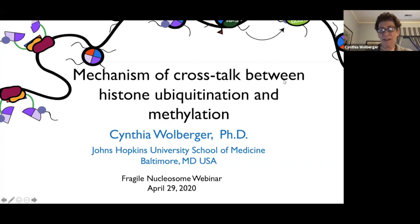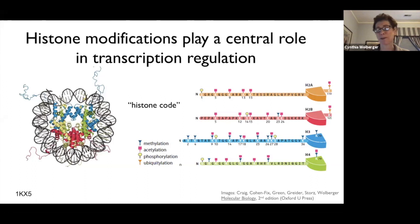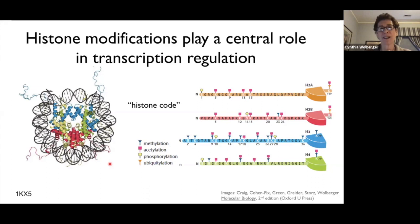I'm going to be talking with you about our work on the mechanism of crosstalk between histone ubiquitination and methylation. I know this is a chromatin meeting, but there are always new people, so I wanted to start by reminding everyone of the very basics. The four core histone proteins, of which there are two copies each in the nucleosome, are subject to an absolutely enormous array of post-translational modifications.